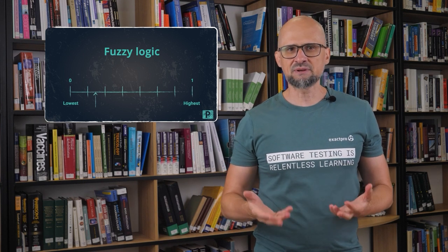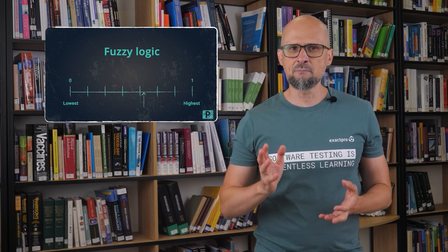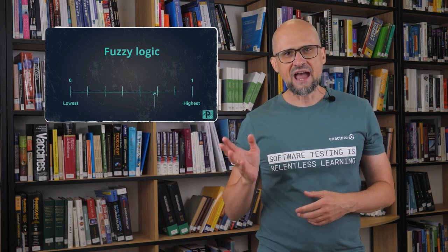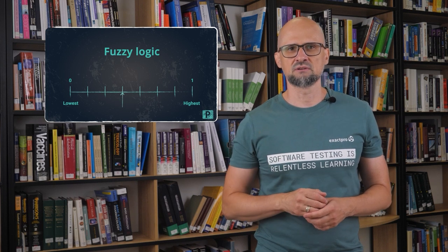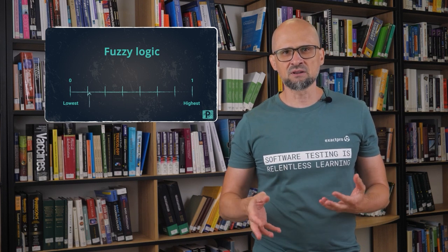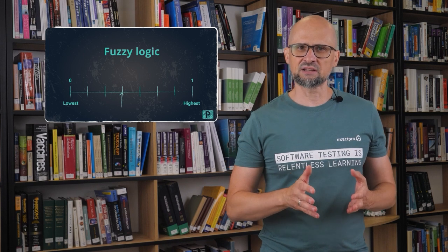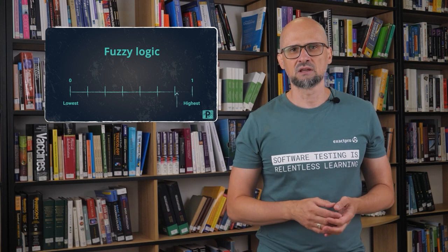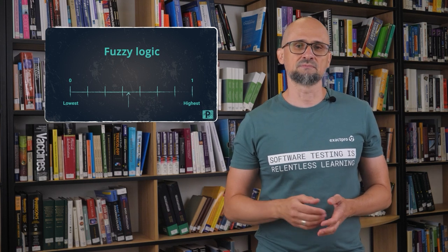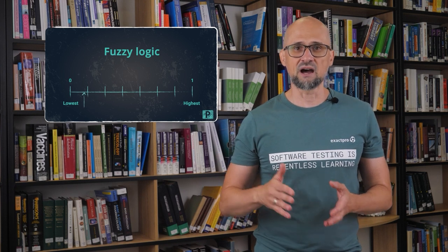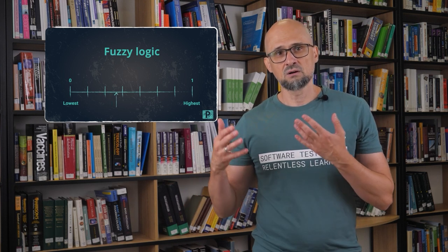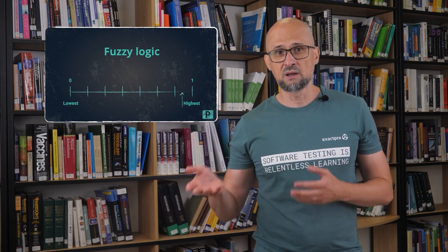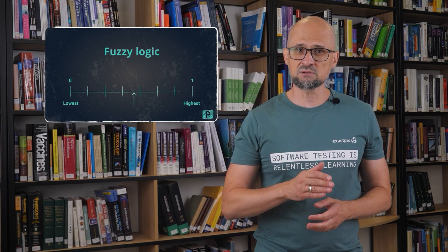For example, they can implement fuzzy logic, where the truth value may be any real number between zero and one. It is used to handle the notion of partial truth. This is very similar to human reasoning. For example, when a tester assigns a priority level to a bug, he answers the question, does this bug need to be fixed quickly? Usually it is not a yes or no question. We set the priority in a range from the highest or one, meaning it needs to be fixed very fast, to the lowest or zero, meaning it can be left for later with intermediate values in between.